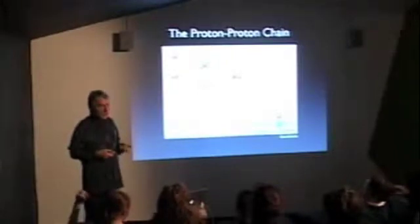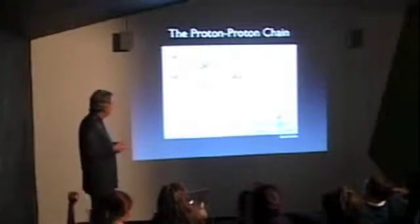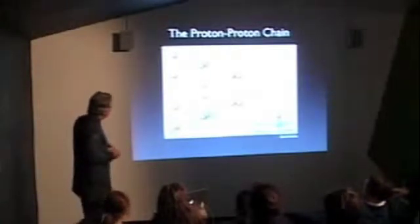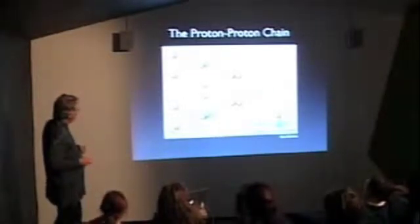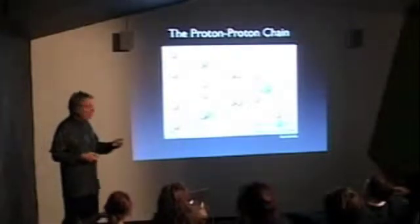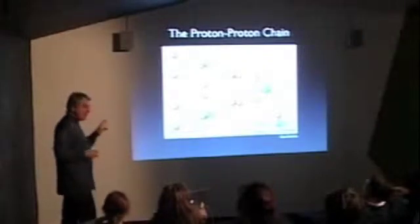This is nuclear fusion, which requires very high temperatures, very high densities, enormous pressure. Now, we just repeat that process, so we've got two helium-3 nuclei there, and then they can combine, and we get helium-4, which is the regular form of helium, and we get two of the protons back. That's basically what's happening inside the Sun.